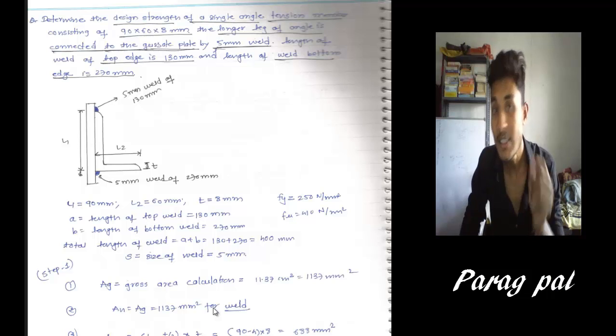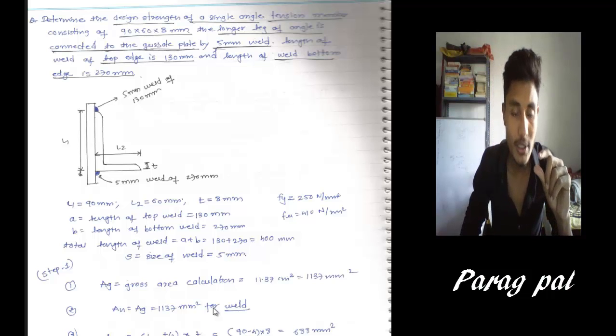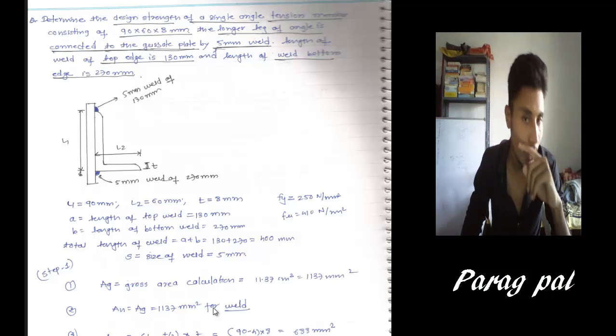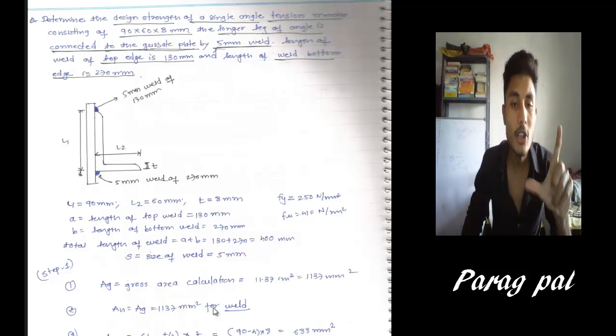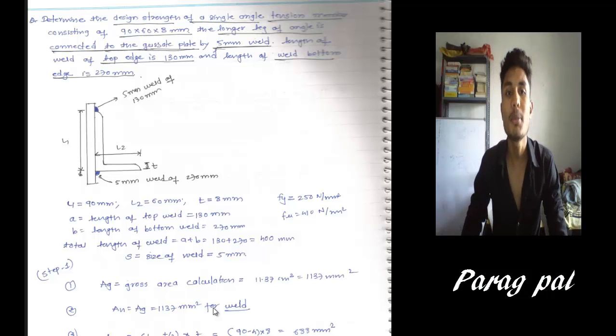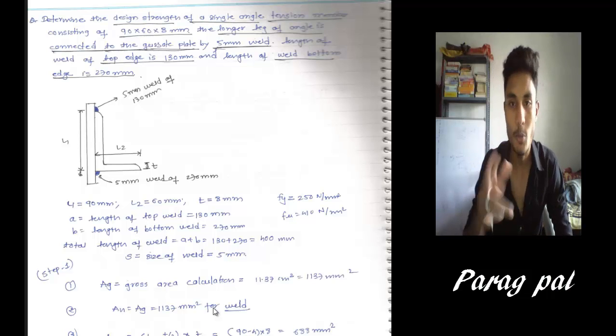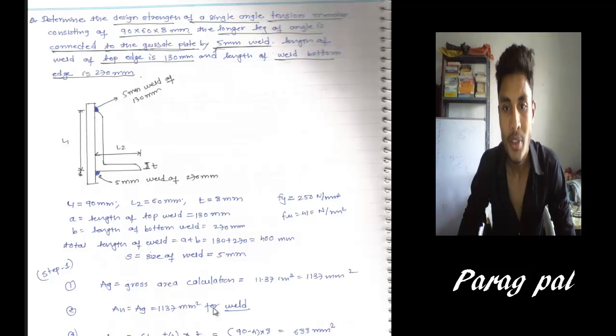So you know the size of weld, the thickness is 5mm. So total length of weld we calculate, it is A plus B, 130 plus 270. Add both of them, it is 400.